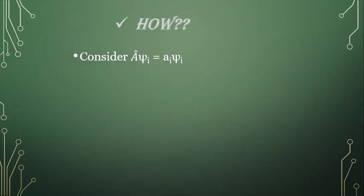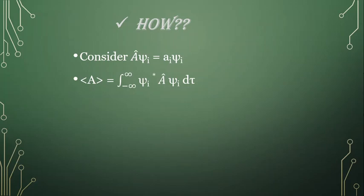Consider the eigenvalue equation A-cap ξᵢ = aᵢ ξᵢ. That is, a system described by wave function ξᵢ will be operated on by operator A-cap, giving you the same wave function with a constant aᵢ, which is the eigenvalue. We have already studied the expectation value, which is roughly the average value in quantum mechanics — something like a measurement of an observable. So let us see whether the expectation value will be equal to the eigenvalue or not.